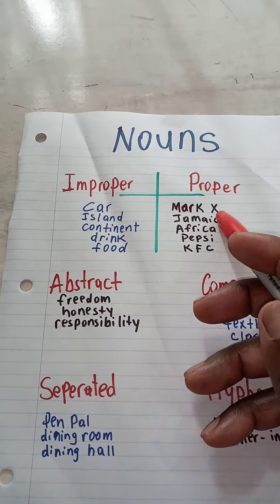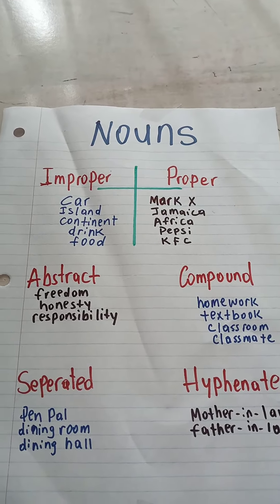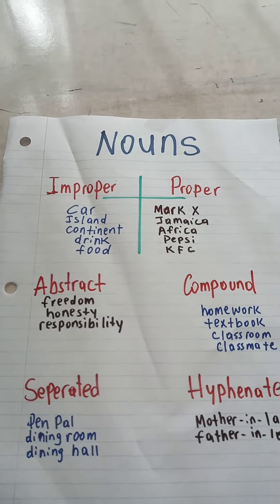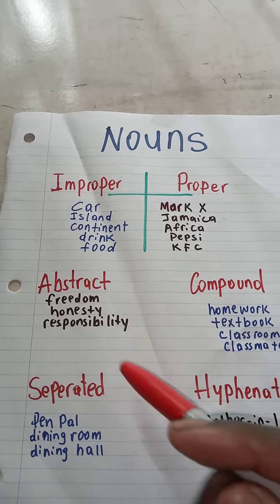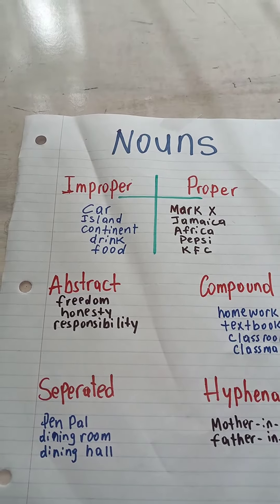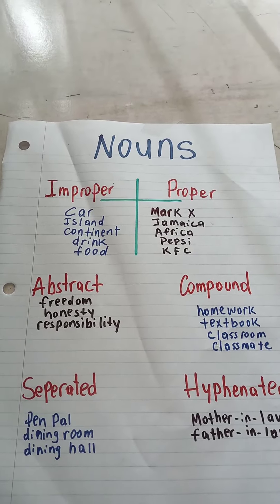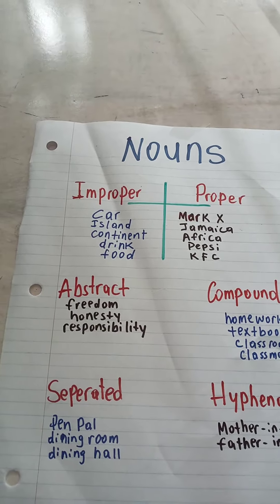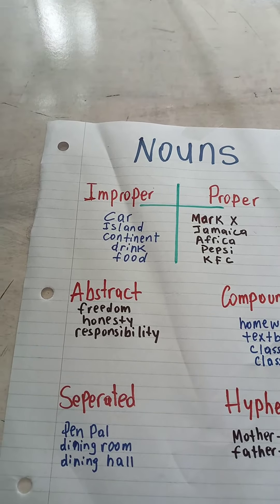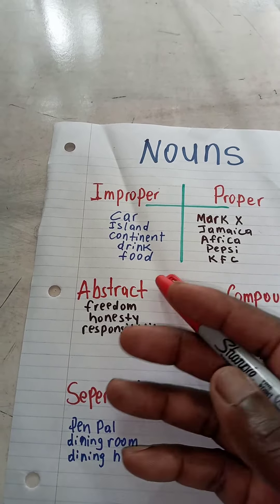An island could be Jamaica or Trinidad and Tobago, St. Kitts and Nevis, Grenada, Dominica — those are islands. A continent: Africa, Europe, Asia, Australia — all the several continents. Once you name them, they are specific, so they would be proper nouns.